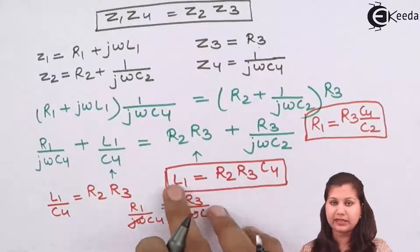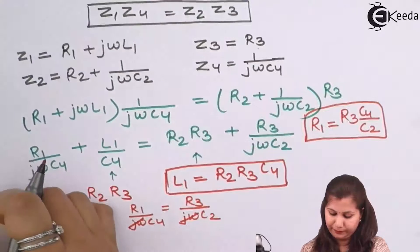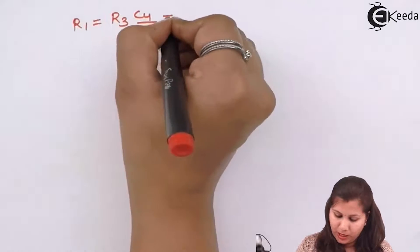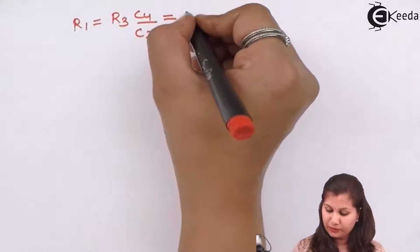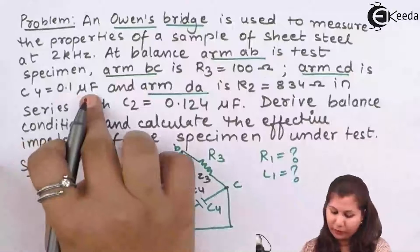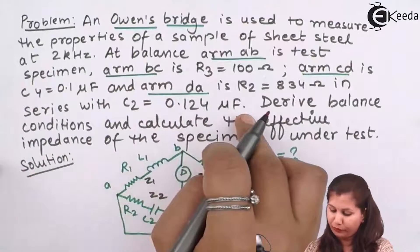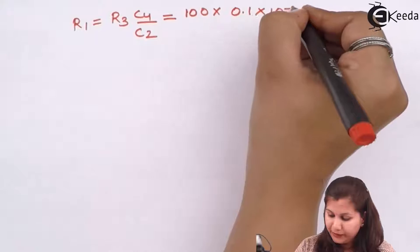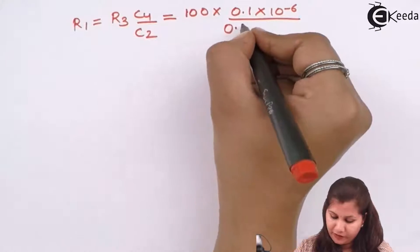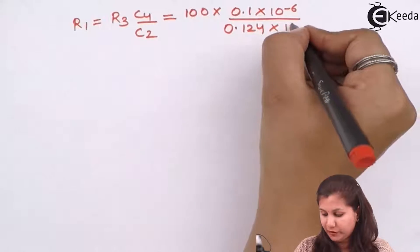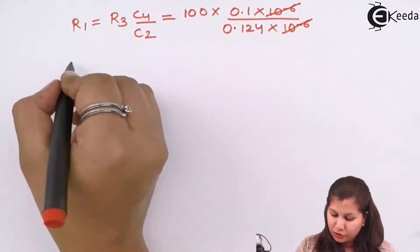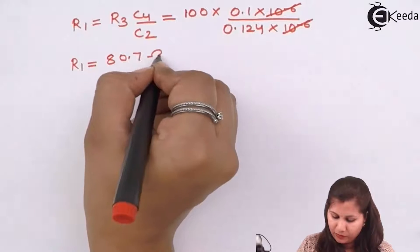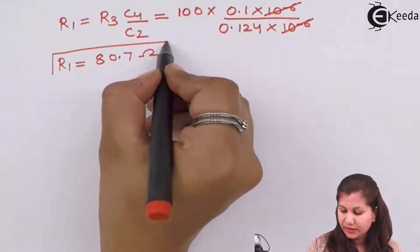R1 = R3·C4/C2. R3 is given as 100 ohms, C4 is given as 0.1 microfarad, and C2 is given as 0.124 microfarad. So R1 = 100 × (0.1×10⁻⁶) / (0.124×10⁻⁶). The 10⁻⁶ cancels, and solving this gives R1 = 80.7 ohms.